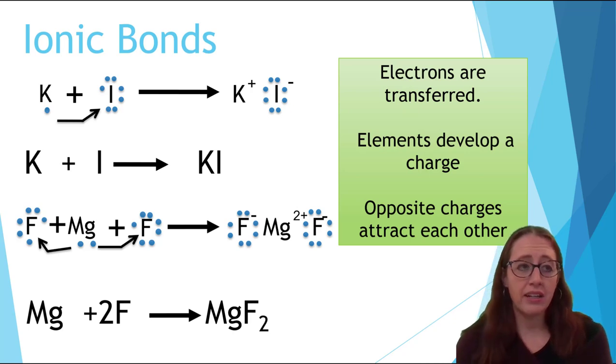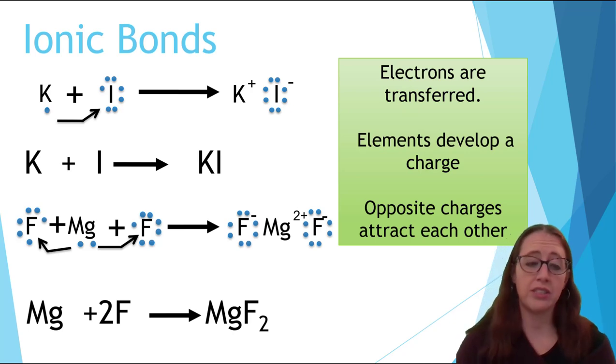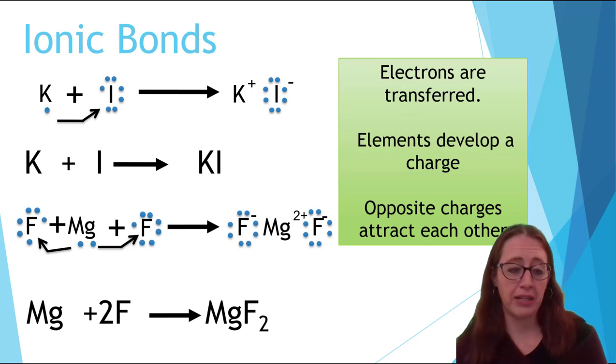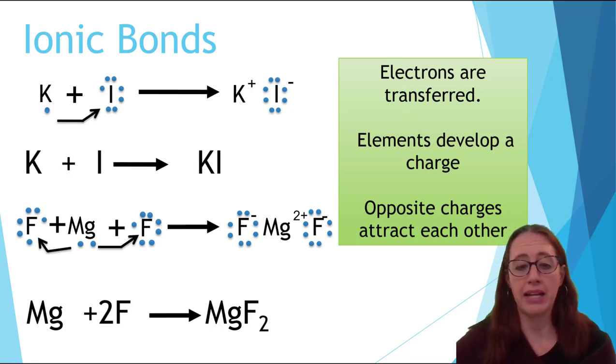And we see here this means that we have one magnesium plus two fluorines goes to magnesium fluoride, which is MgF2, because you need a two to one ratio of the fluoride to magnesium.